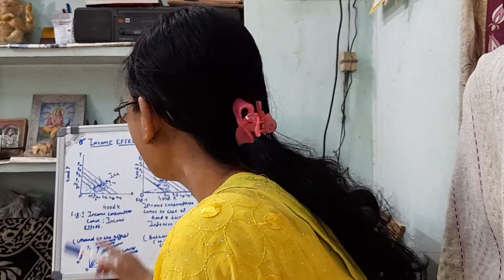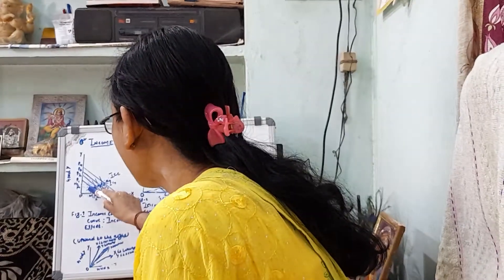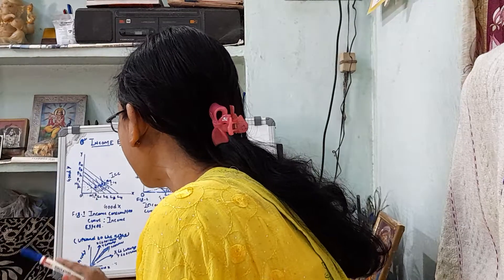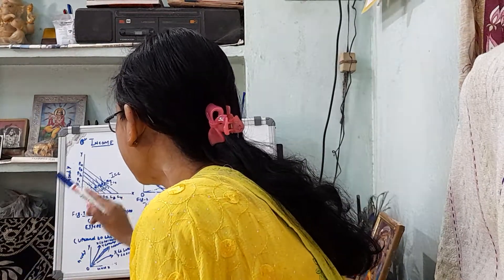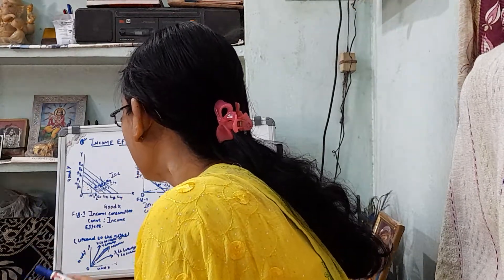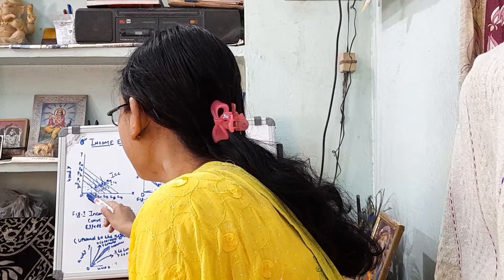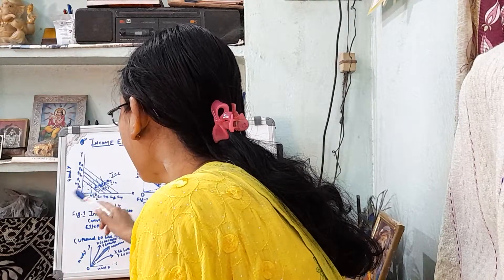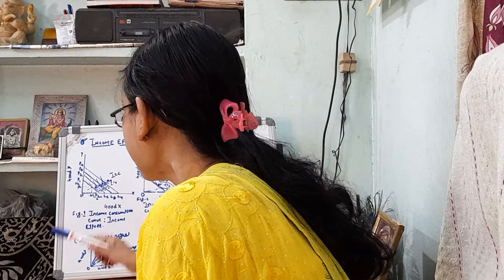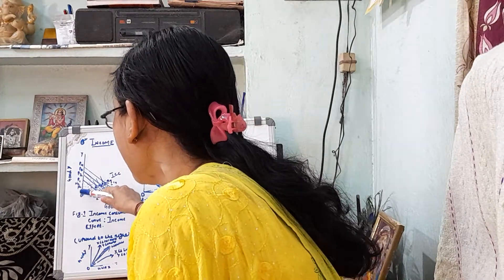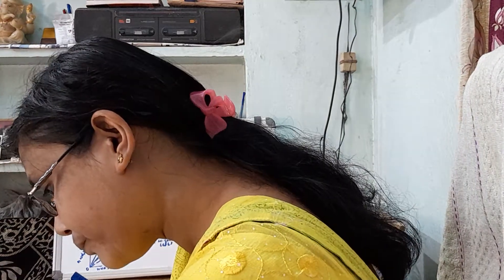The consumer will be in equilibrium at point Q1 on indifference map IC1. The consumer will buy OM1 amount of good eggs and ON1 amount of good wine.